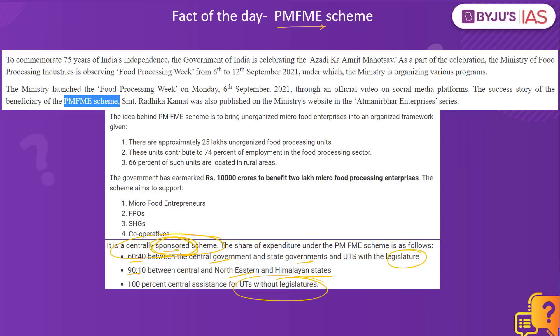The scheme aims to enhance the competitiveness of existing individual micro enterprises engaged in the unorganized sector of the food processing industry. The food processing industry is divided into organized and unorganized sectors; those in the unorganized sector require technical upgradation and assistance from the Government of India as part of formalization. The government has earmarked about ₹10,000 crores to benefit about 2 lakh micro food processing enterprises.